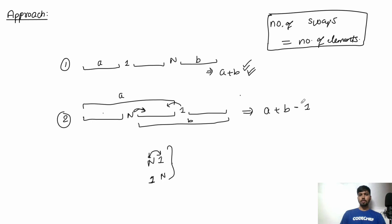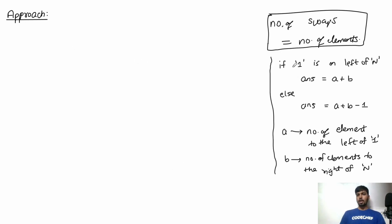Because of this simultaneous move, we need one swap less than the first case. So if 1 is on the left-hand side of N, the answer is A + B. If 1 is on the right-hand side of N, the answer is A + B - 1. To check which case applies, we iterate through array P and store the index of 1 as i1 and the index of N as iN. If i1 < iN, then 1 is on the left of N.